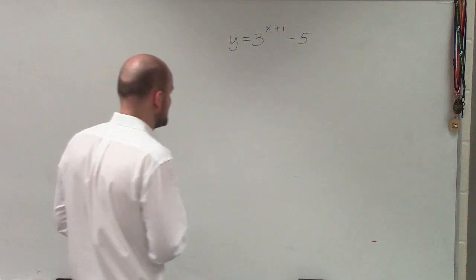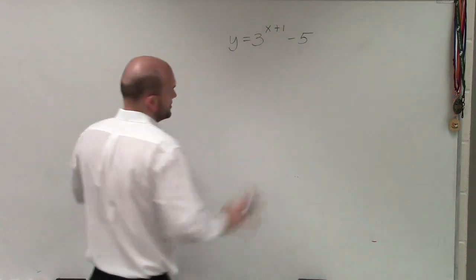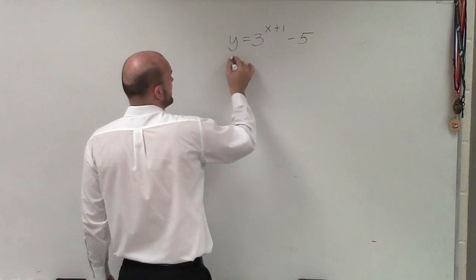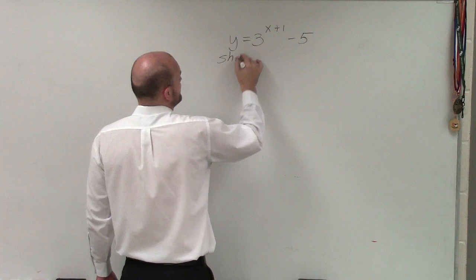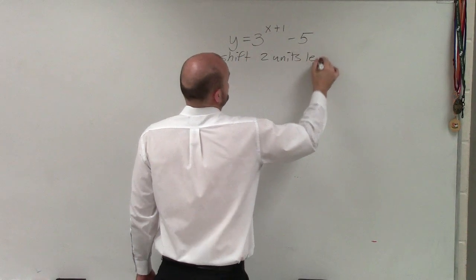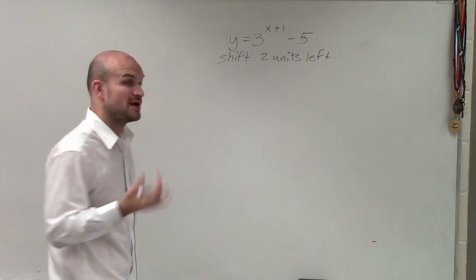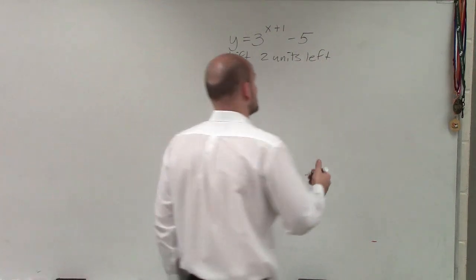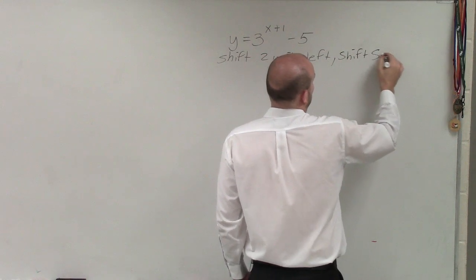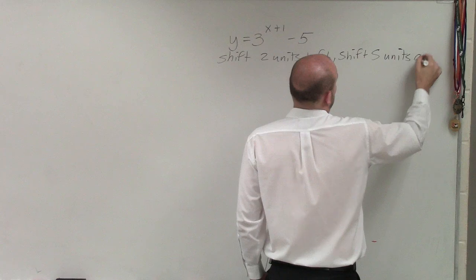So when doing this, the first thing I'd like to do is make sure that I have a correct understanding of the transformations. I wrote them down here. Since I'm adding a 1 inside the function, that's going to shift my graph 2 units left. And since I'm subtracting a 5 outside my function, that's going to tell me I'm going to shift my graph 5 units down.